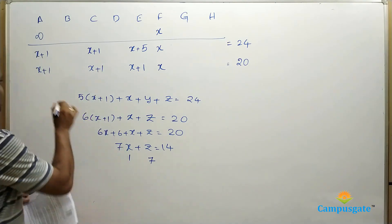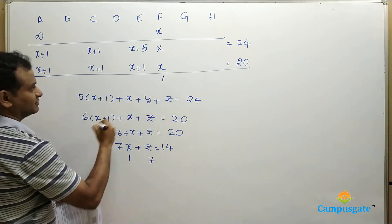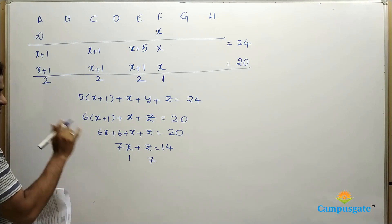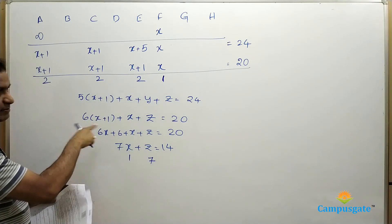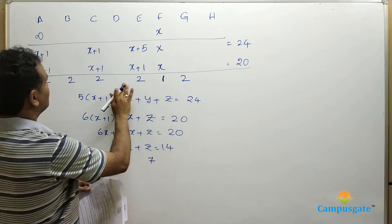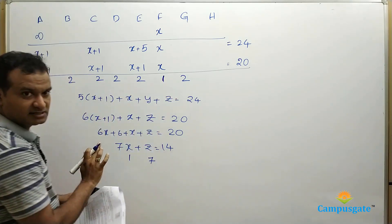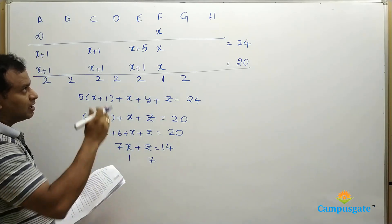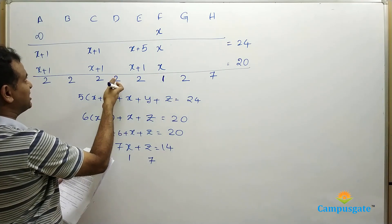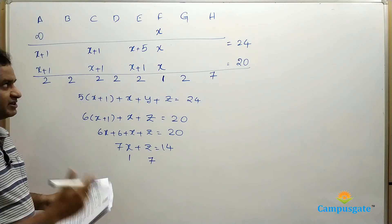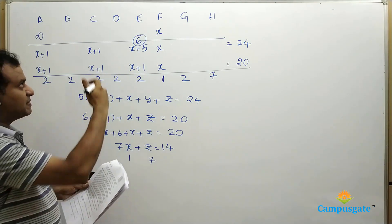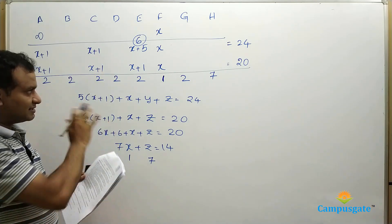So X equals 1, meaning F's Erdős number is 1. X plus 1 equals 2, so six people have Erdős number 2 at the end of the fifth day. The remaining one person has Z equals 7. And since E's Erdős number was X plus 5, substituting X equals 1 gives E an initial Erdős number of 6 — which changed to 2 after he co-authored a paper with F. These are all the Erdős numbers at the end of the fifth day.